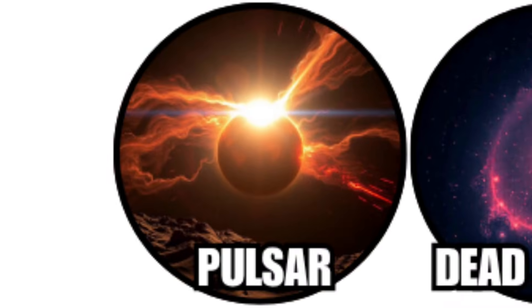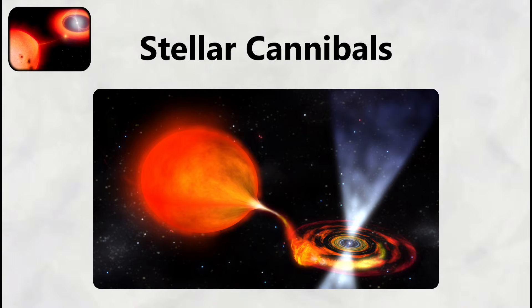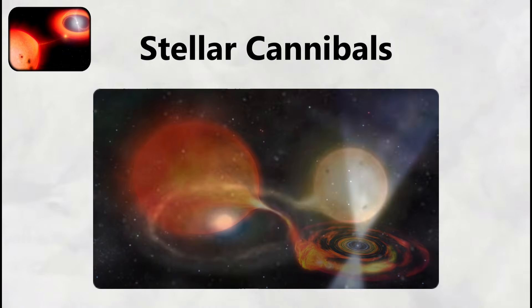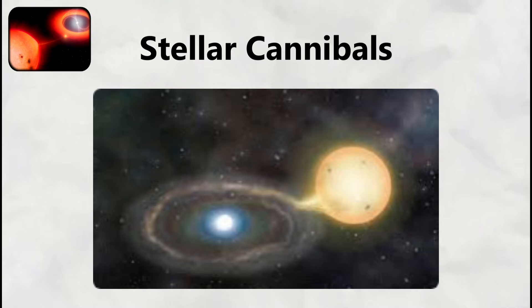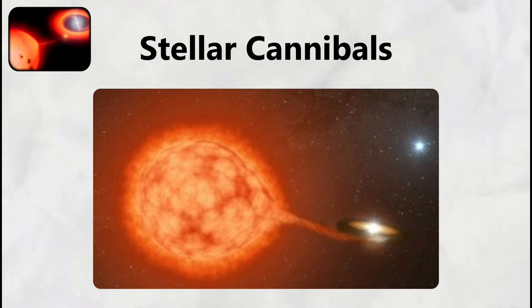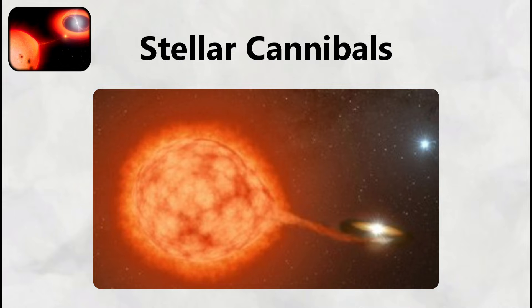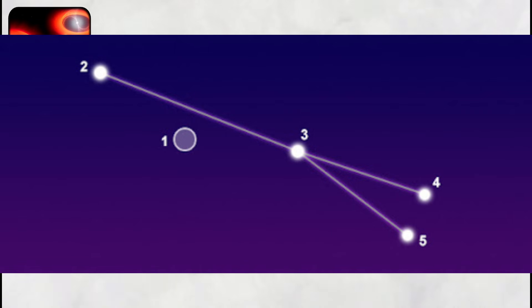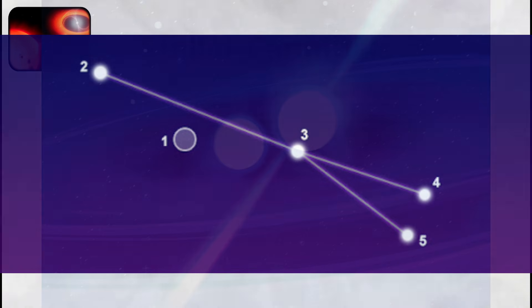Stellar Cannibals. The Black Widow pulsar represents one of the most terrifying stellar systems in our galaxy, where a neutron star systematically destroys its companion through intense radiation and gravitational forces. Located approximately 6,500 light-years away in the constellation Sagitta, this pulsar spins 622 times per second, while emitting beams of radiation that sweep across space like a cosmic lighthouse.